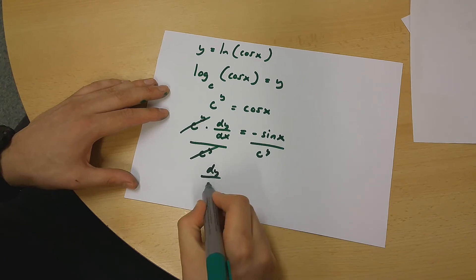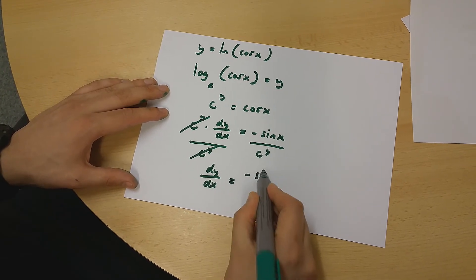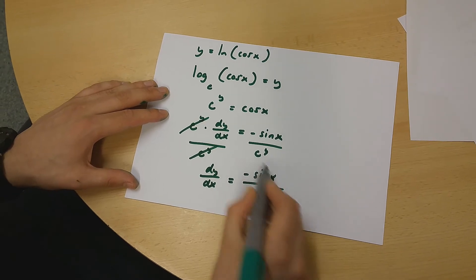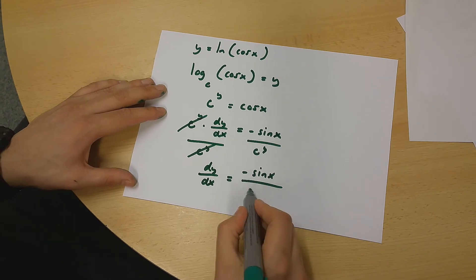This means that dy over dx is going to be equal to minus sin x over e to the power of y. But e to the power of y is equal to cos x.